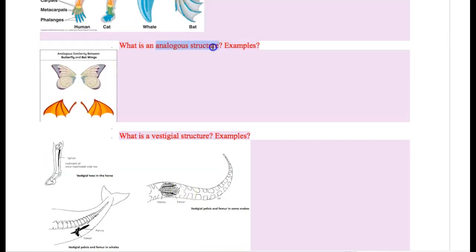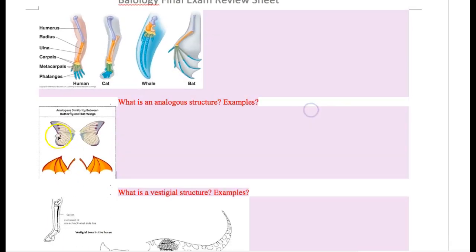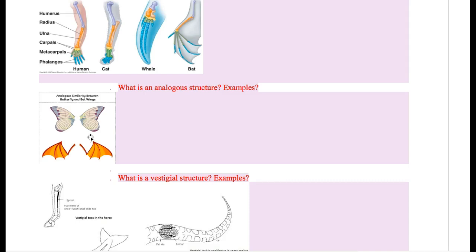What is analogous structure? If homologous structure means similar structures that tell you about common ancestry, then analogous structure is the opposite — similar characteristics on the outside, but it doesn't tell you about common ancestry. The example would be butterfly wings and bat wings. They are both used to fly, but butterfly wings don't have bones — they have exoskeleton. A butterfly is not an animal, so it developed wings on its own evolutionary path. The bat wing also developed on its own. They did not have wings because their common ancestor had wings.